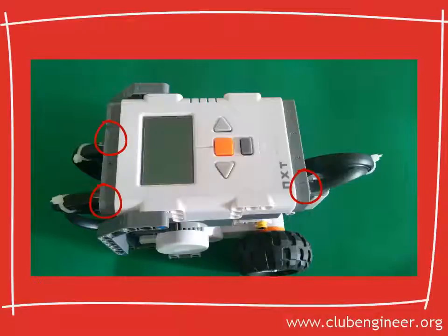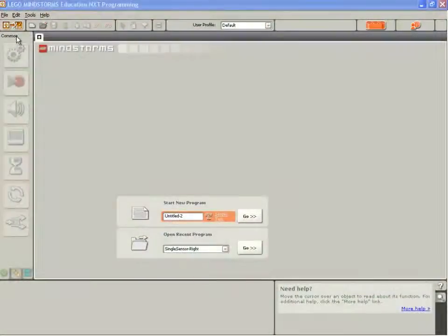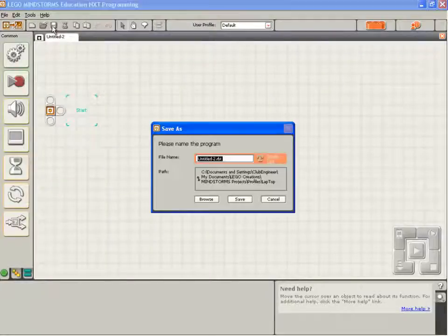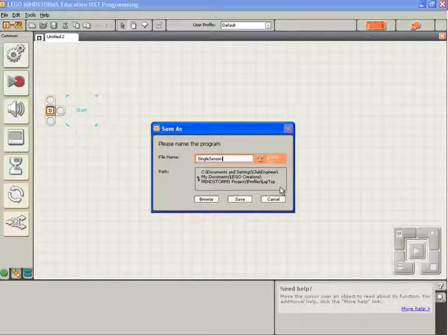So we'll start by writing a single sensor line following program using a switch block as main part of the logic. Create a new program. I'm going to save it. I'm going to call it single sensor, and we'll make this one follow the left hand side of the line. So single sensor hyphen left.